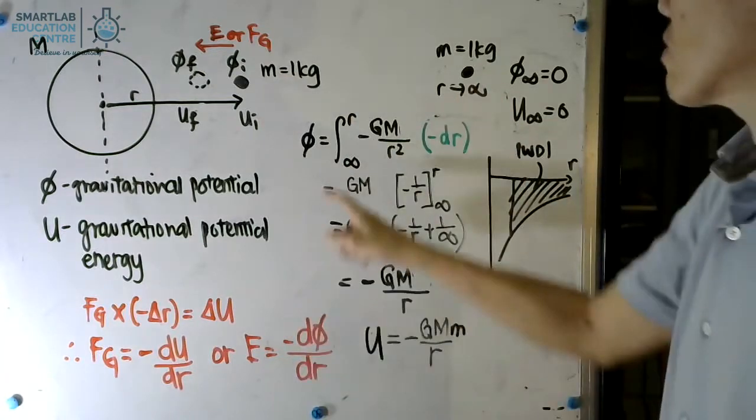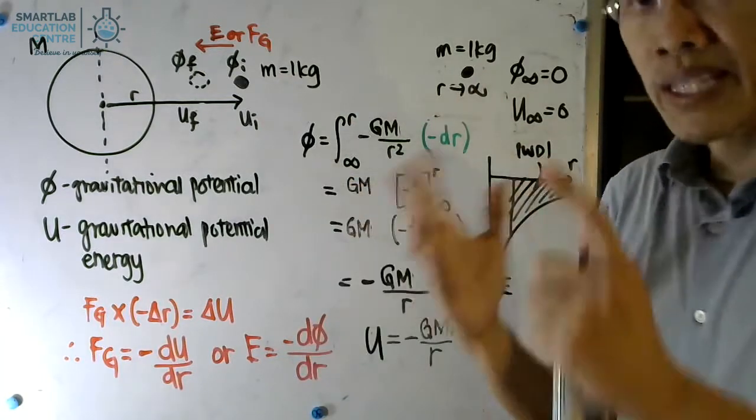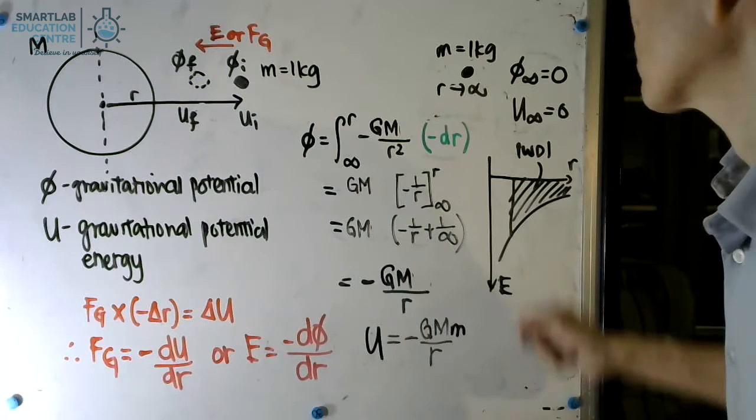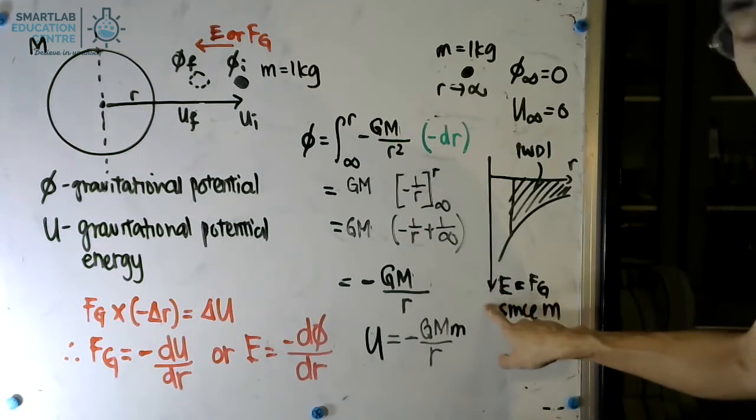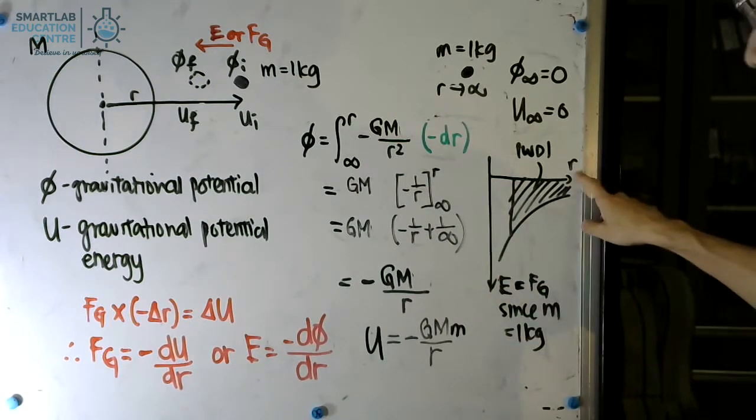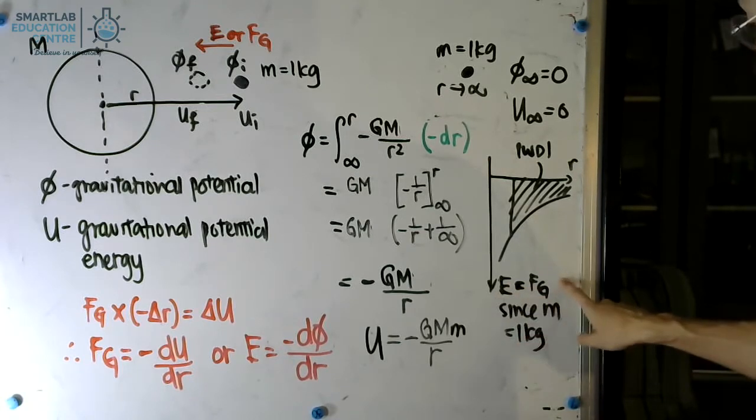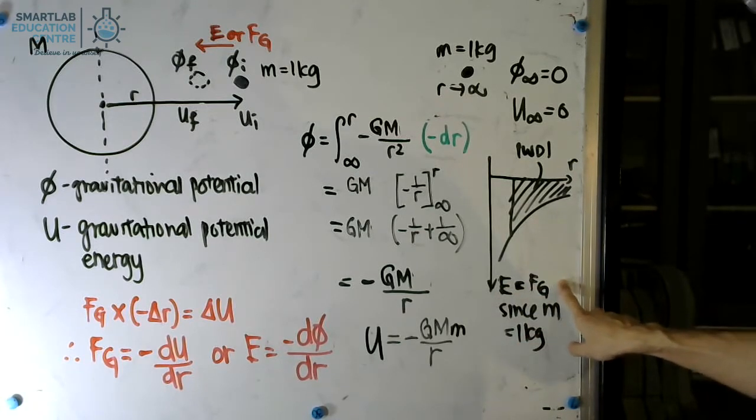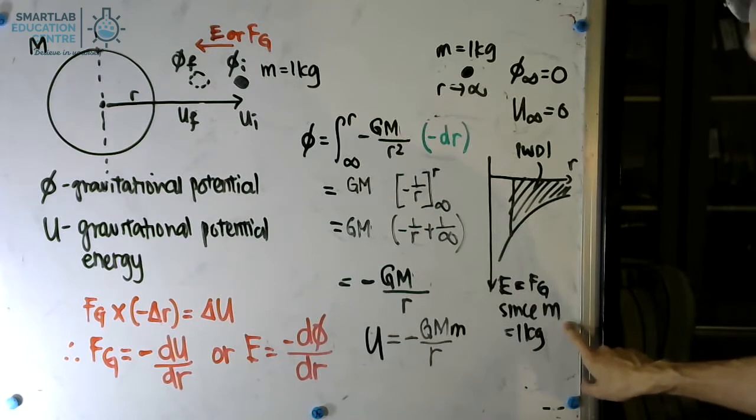Using the definitions, we can now work up a mathematical expression for it. We can consider the gravitational field strength graph versus the R graph. In this case, the gravitational field strength is the same as the gravitational attraction force since we are referring to per unit mass.